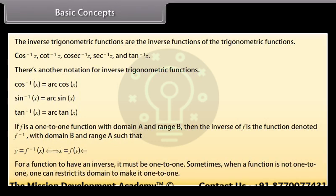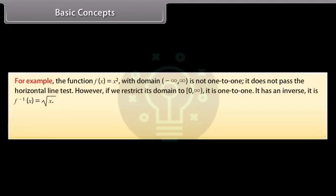For a function to have an inverse, it must be one-to-one. Sometimes, when a function is not one-to-one, one can restrict its domain to make it one-to-one. For example, the function f(x) = x² with domain (-∞, ∞) is not one-to-one — it does not pass the horizontal line test. However, if we restrict its domain to [0, ∞), it is one-to-one and has an inverse: f⁻¹(x) = √x.